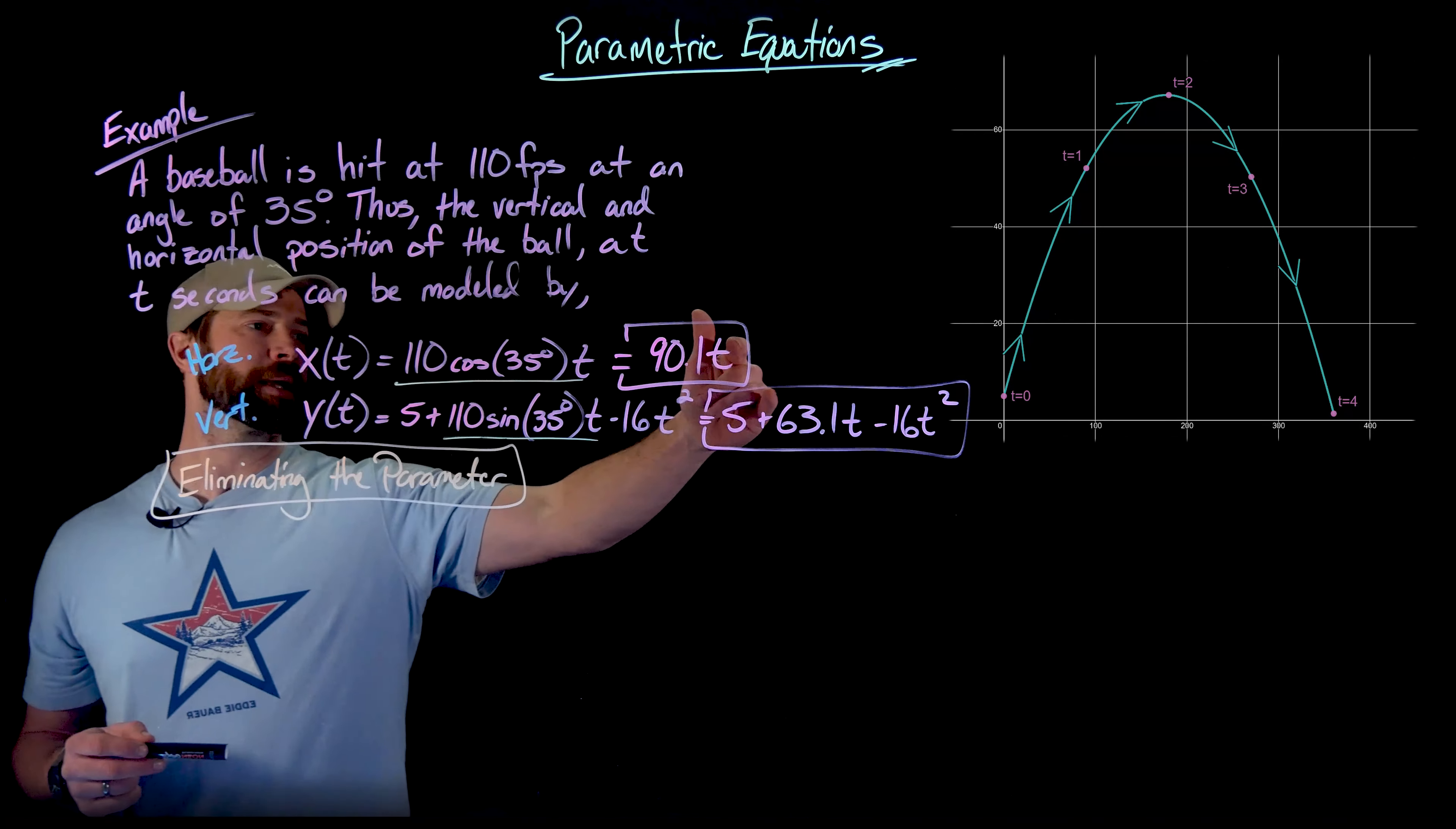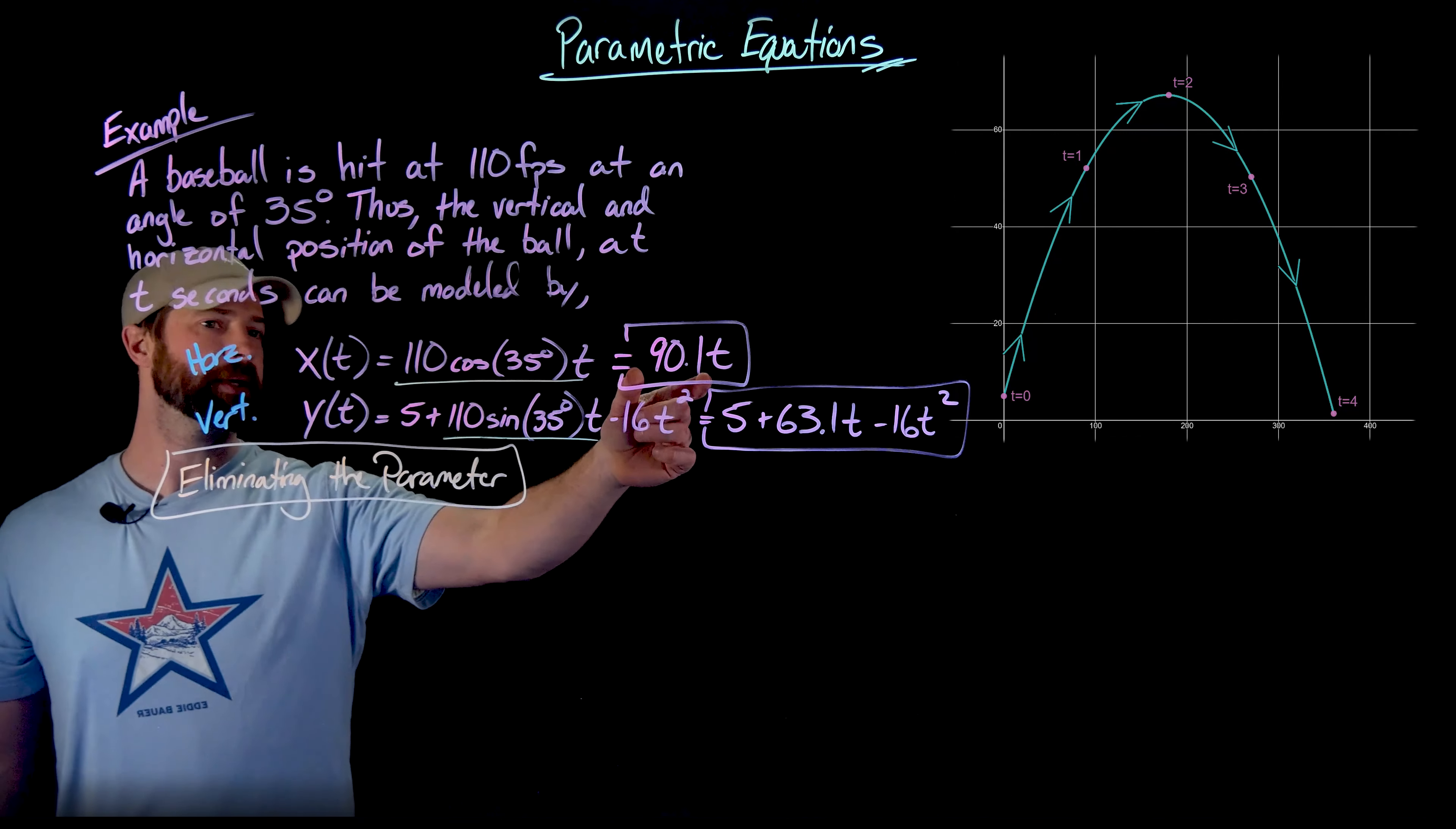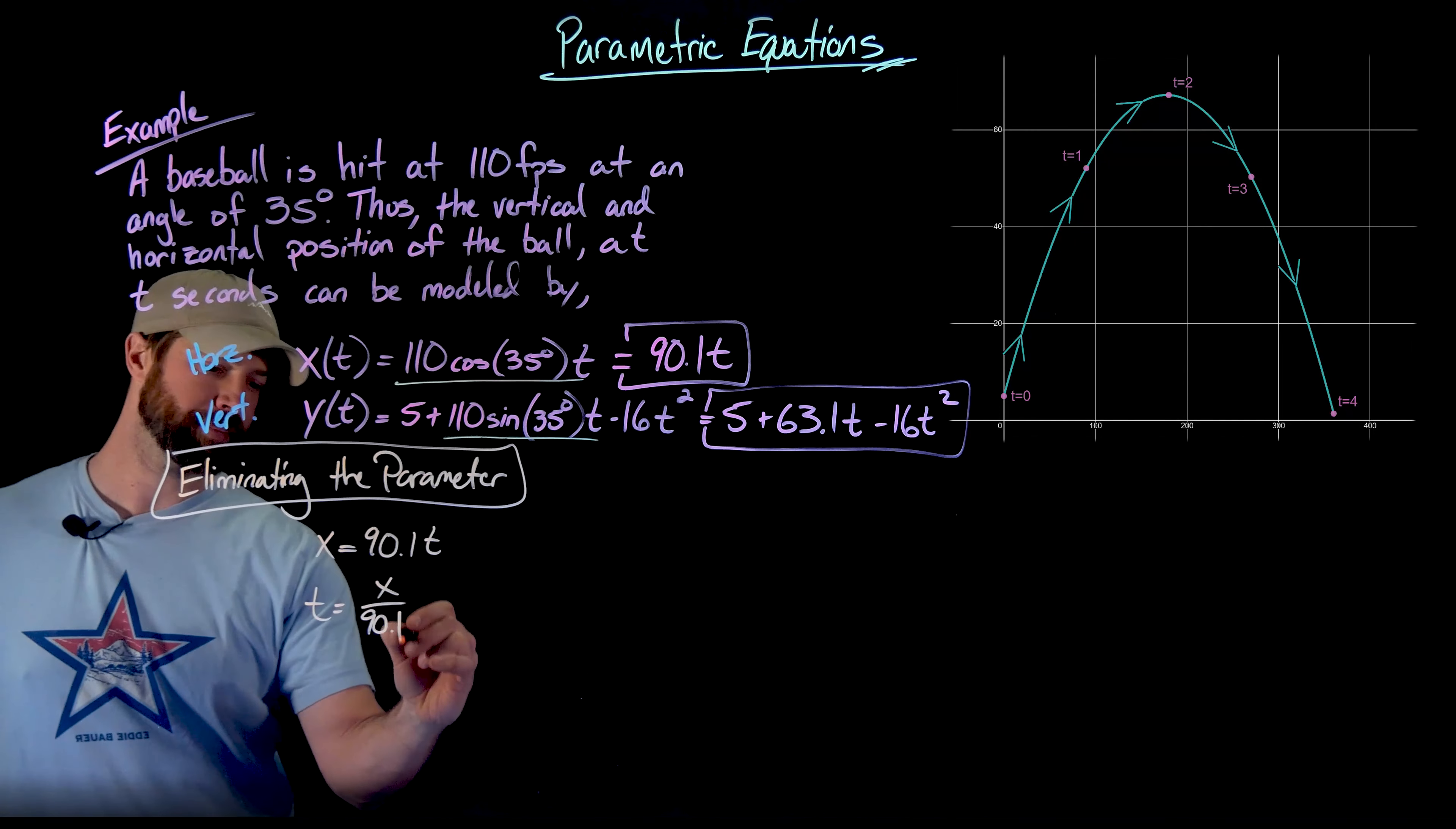I'll just show you how to do it right here. What I'm going to do is I'm really, in a way, kind of like solving a system of linear equations. I want to eliminate the t, so eliminating the parameter. What I'm going to do is take either one of these equations, and I'm going to solve it for t. So I'm going to use this one right here, because again, it's a lot more easy. So I'm going to take the fact that x equals 90.1t. If I solve this for t, what I get is t equals x divided by 90.1.